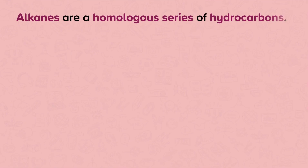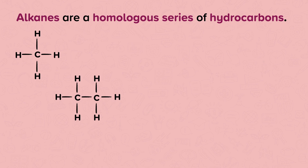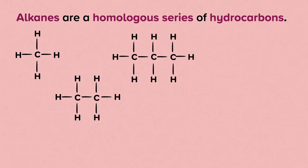Alkanes are a homologous series of hydrocarbons. A family of organic compounds is called a homologous series. Here are the first 4 members of the homologous series of alkanes. A homologous series is a series of related organic compounds which have similar chemical properties and trends in their physical properties.